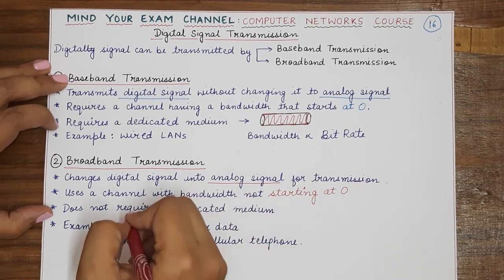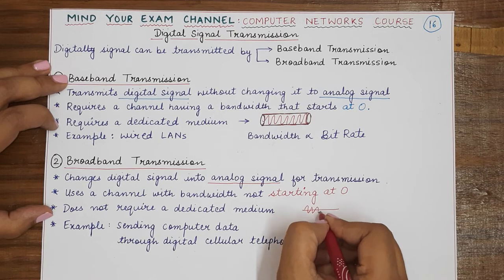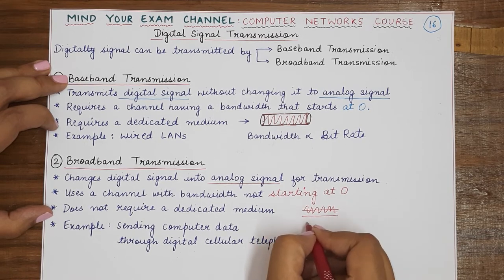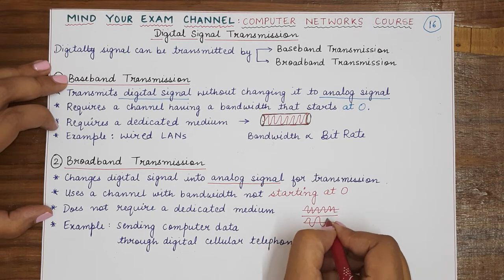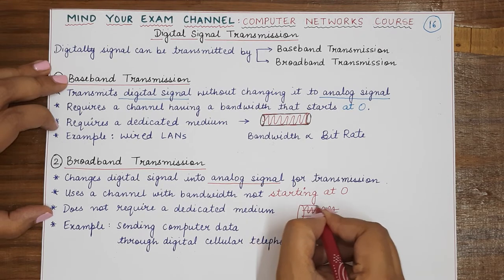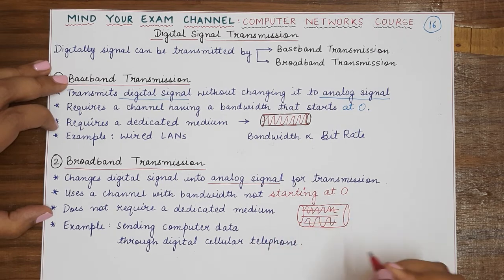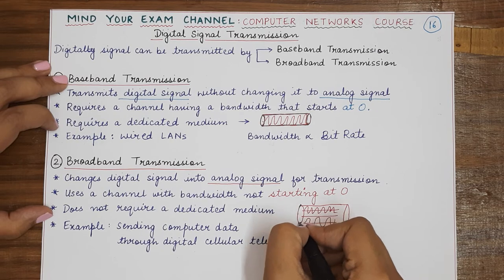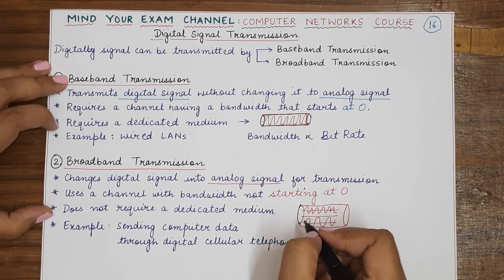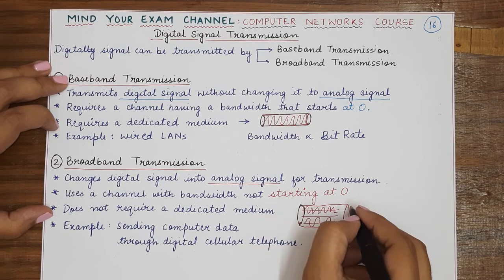The channel in broadband transmission may not be dedicated — it might be shared by multiple parties, and multiple signals might be transmitted through the channel by dividing it logically into separate parts. The most common example that uses broadband transmission is the digital cellular telephone, which is used to send computer data.